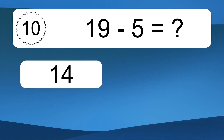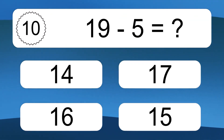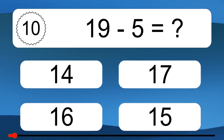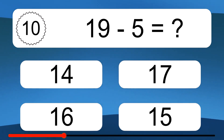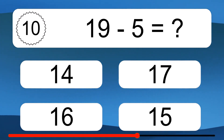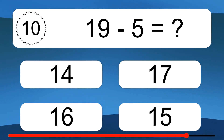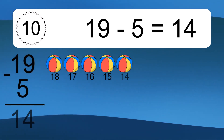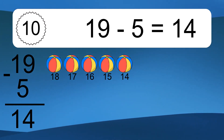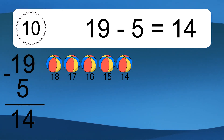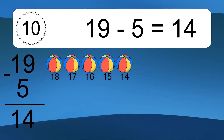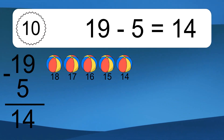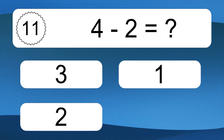19 minus 5 equals what? 19 minus 5 equals 14. Let's count it. 18, 17, 16, 15, 14.